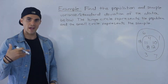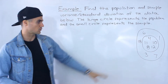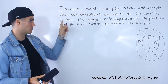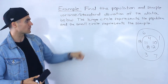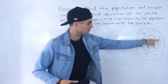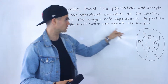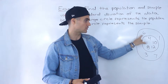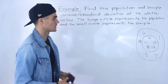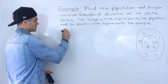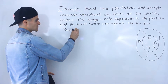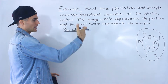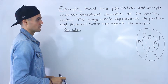Let's go through an example where we actually have to find the standard deviation, given numbers to work with. We've got to find the population and sample variance and standard deviation of that data. The large circle — everything within it — represents the population, and the small circle represents the sample of that population. I'm first going to deal with the population as a whole, then we'll work with the sample as well.